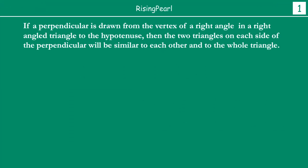So the theorem goes like this. If a perpendicular is drawn from the vertex of a right angle in a right angled triangle to the hypotenuse, then the two triangles on each side of the perpendicular will be similar to each other and to the entire triangle.